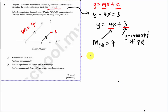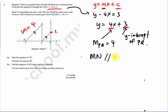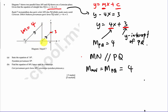In an exam paper you can write: MN is parallel to PQ, therefore the gradient of MN is the same as the gradient of PQ, which equals 4.